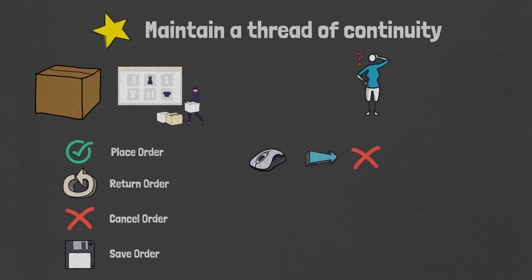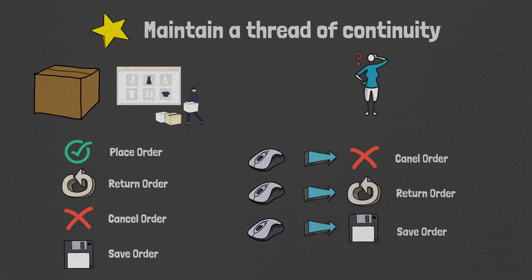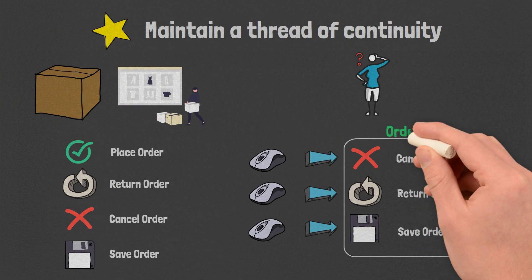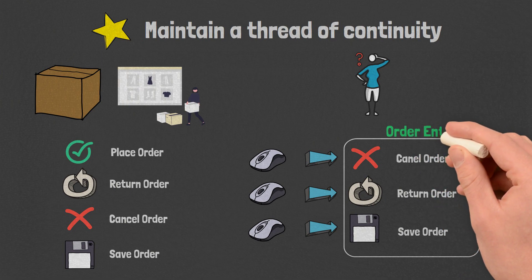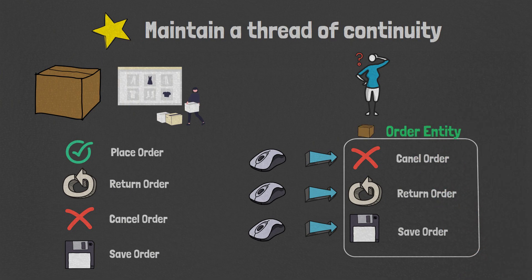Maybe they will start an order and immediately delete it, or perhaps they will return it. Or maybe they are building a cart to plan a larger purchase. But no matter the actions the customer ultimately decides to take against their order, it's the entity's responsibility to manage the consistent existence of that object over its lifetime, no matter how long that ends up being.